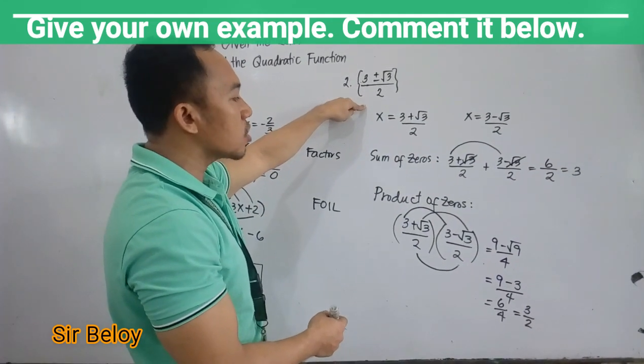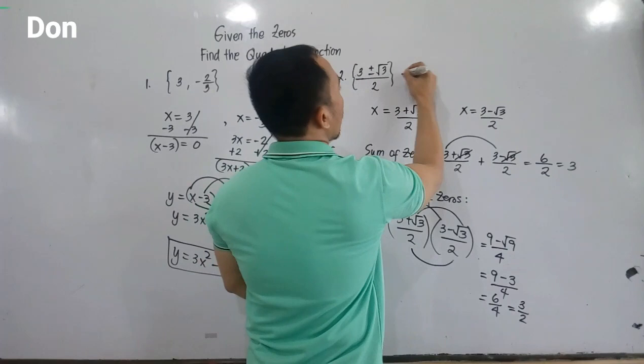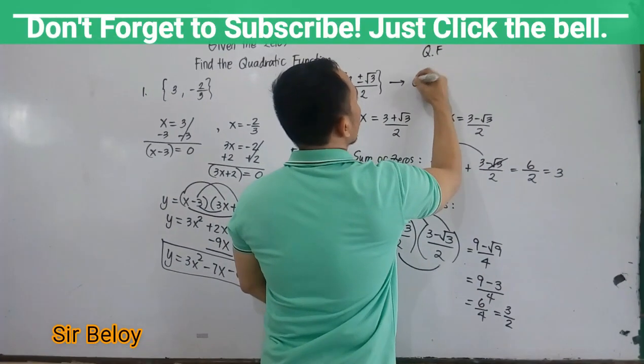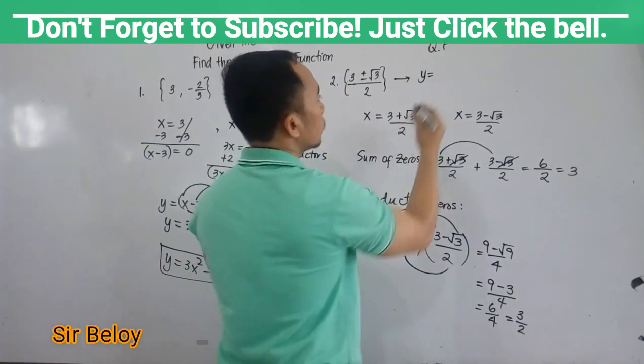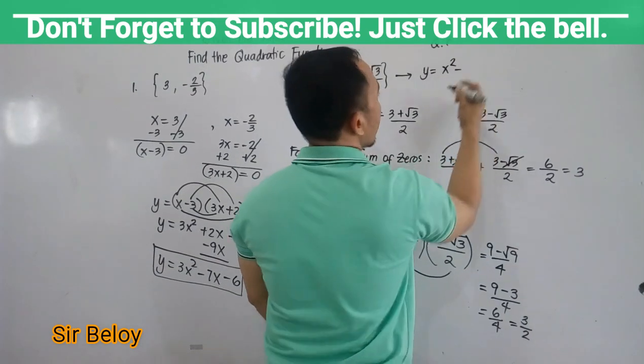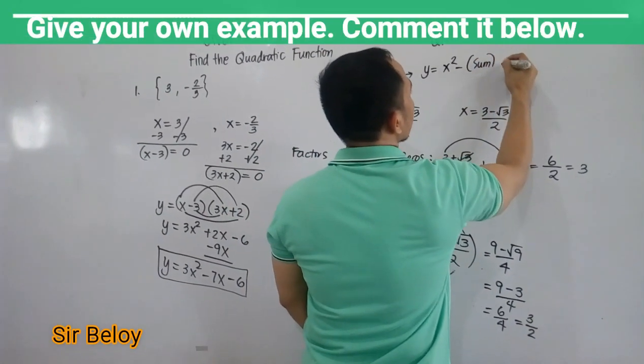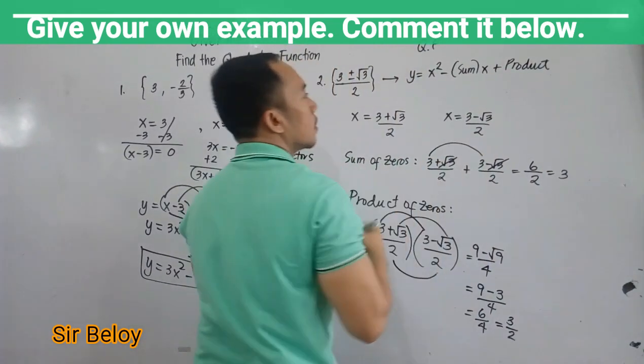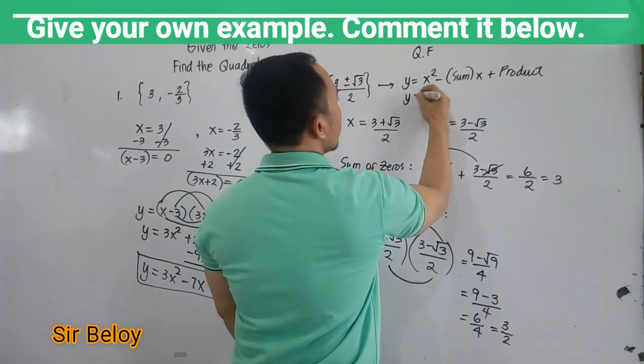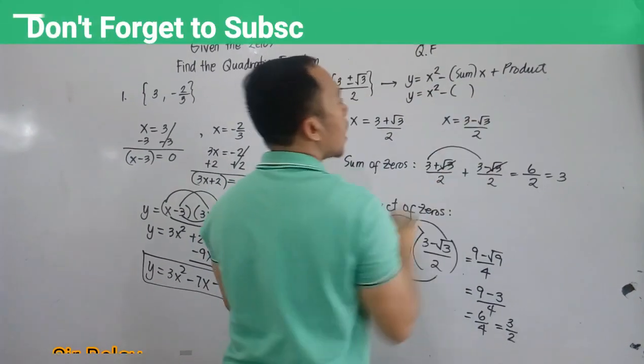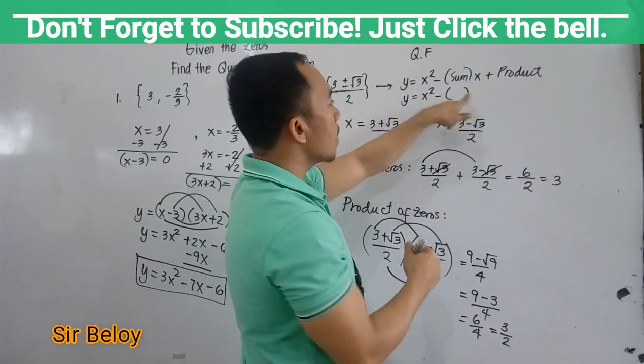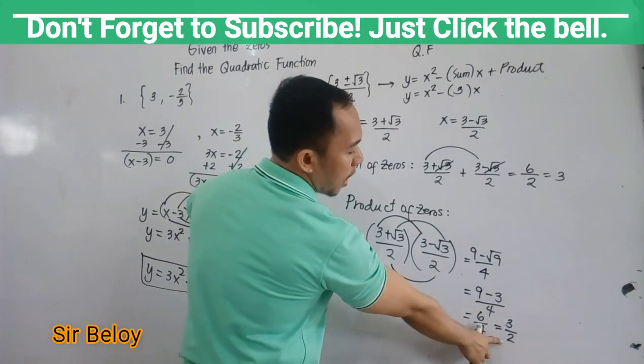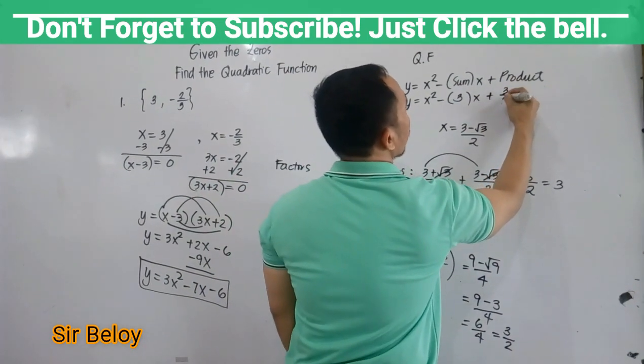So what is now the quadratic function given the sum and the product? So the quadratic function is Y equals X squared minus sum times X plus product. So this is now Y equals X squared minus, your sum is 3, so substitute 3 here, copy X, then your product is 3 over 2.